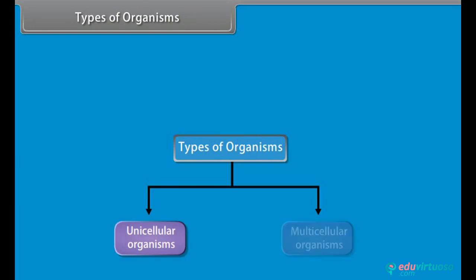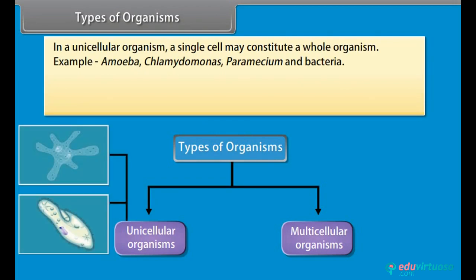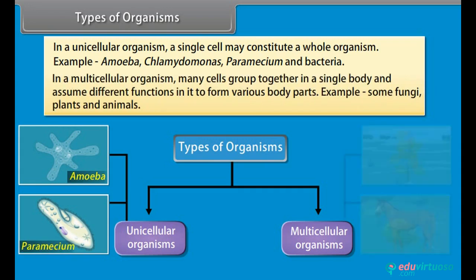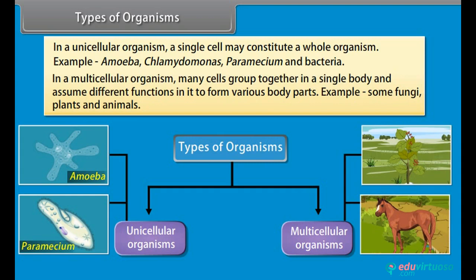Types of organisms: In unicellular organisms, a single cell constitutes a whole organism. Examples include Amoeba, Chlamydomonas, Paramecium, and bacteria. In multicellular organisms, many cells group together in a single body and assume different functions to form various body parts. Examples include some fungi, plants, and animals.